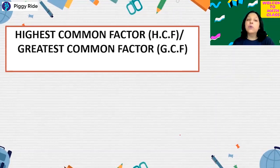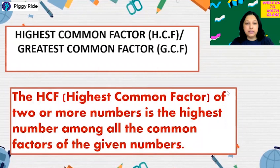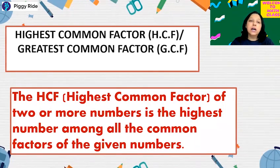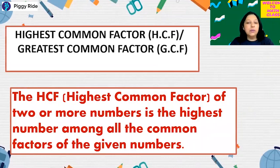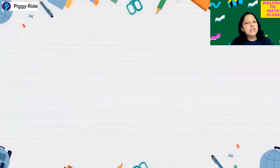So first of all, what is HCF or what is highest common factor? Highest common factor is when you calculate the factors of two or more numbers, the highest number among all the common factors of the given numbers is called a highest common factor, or we also call it as GCF. Now let's learn all the different methods to find GCF.